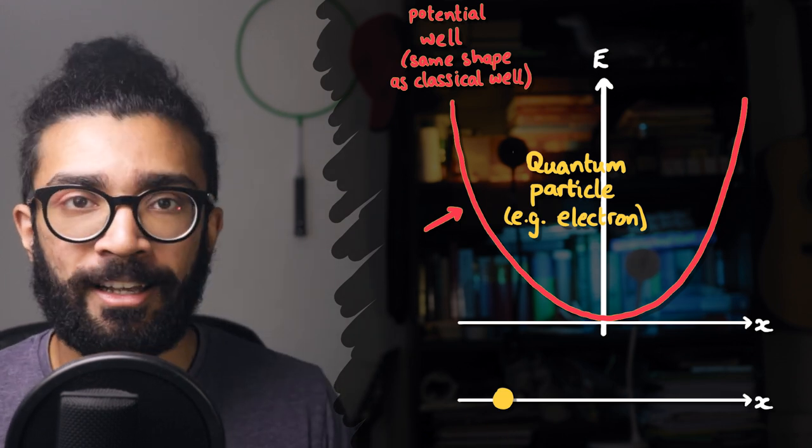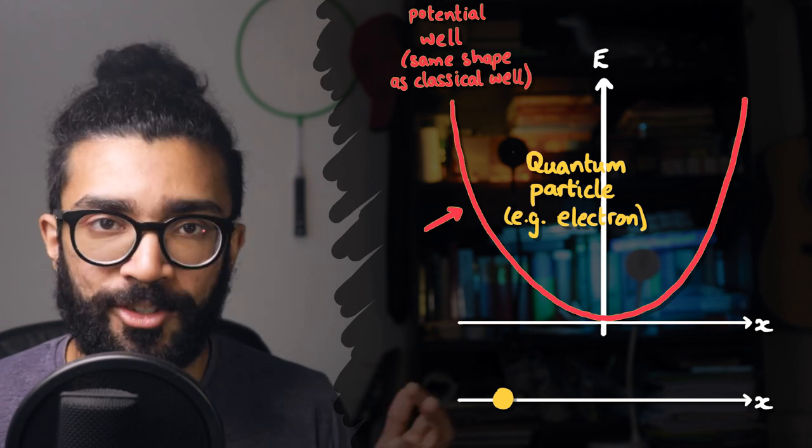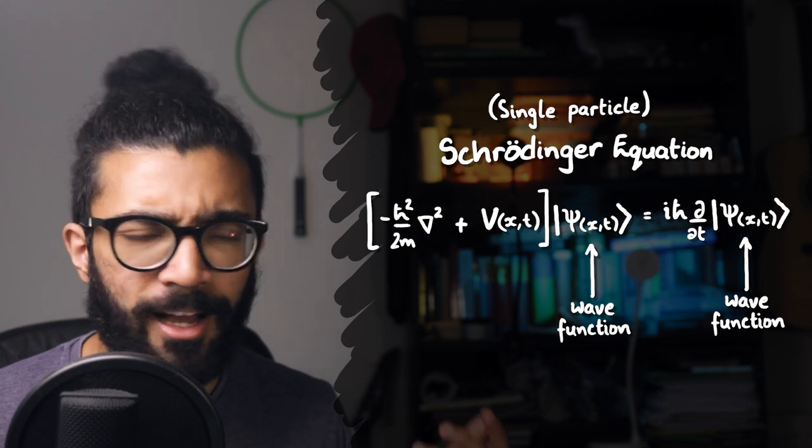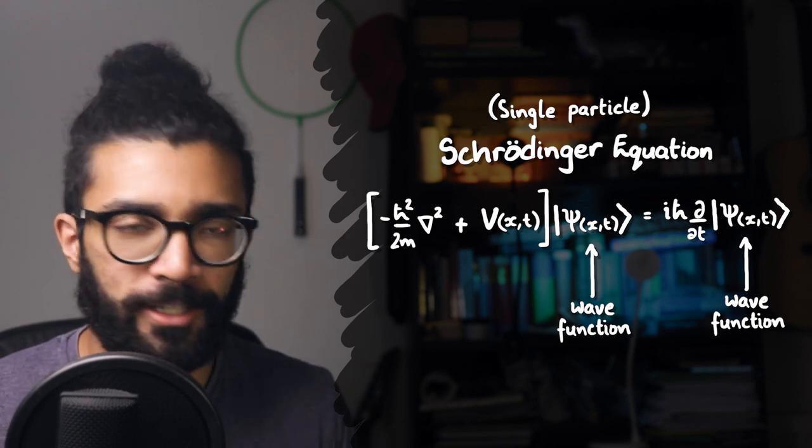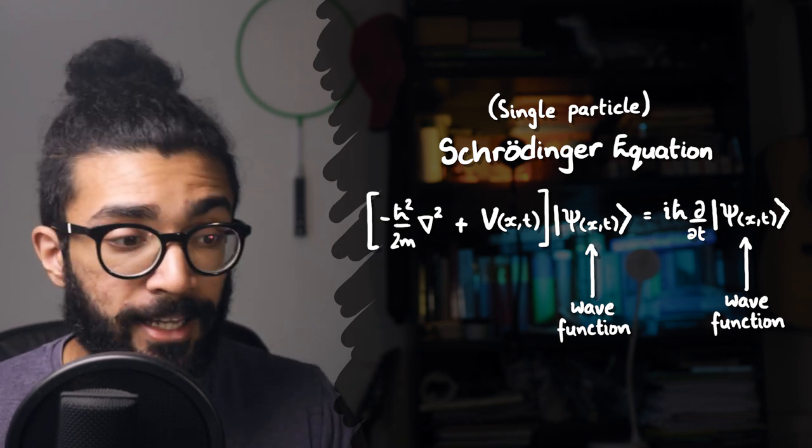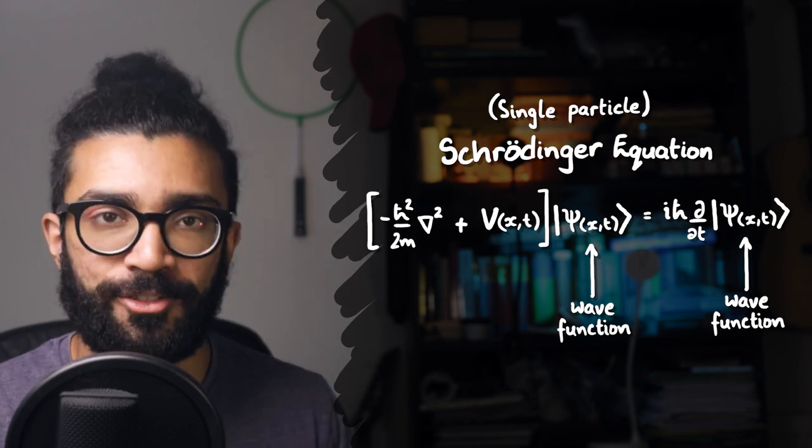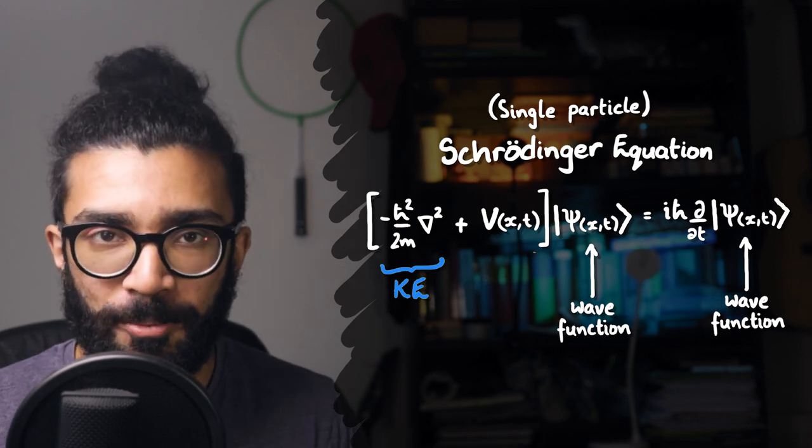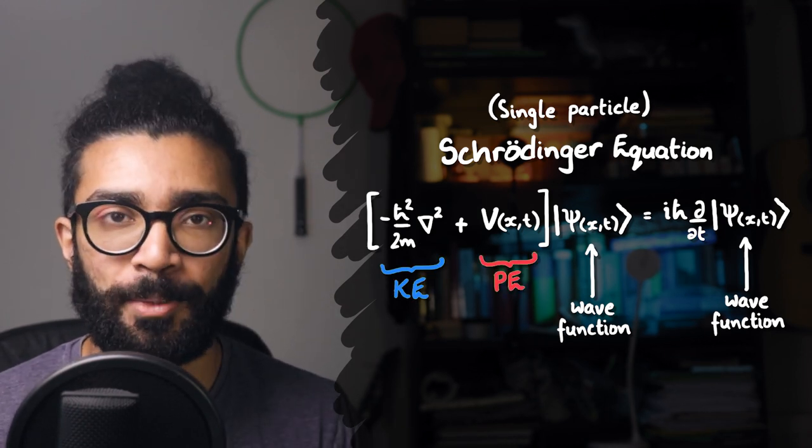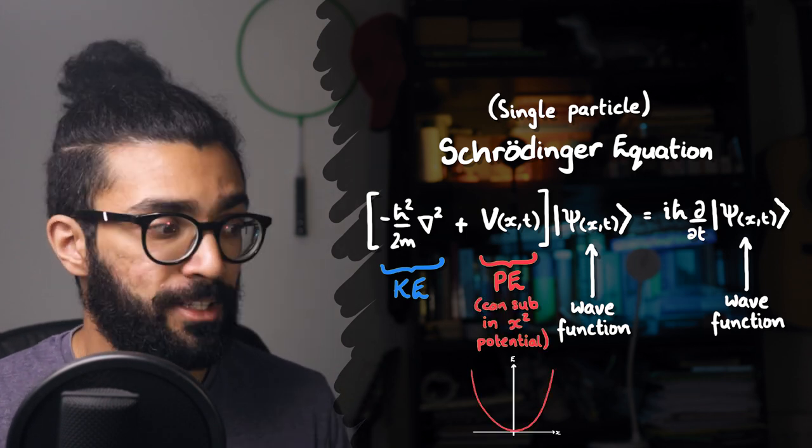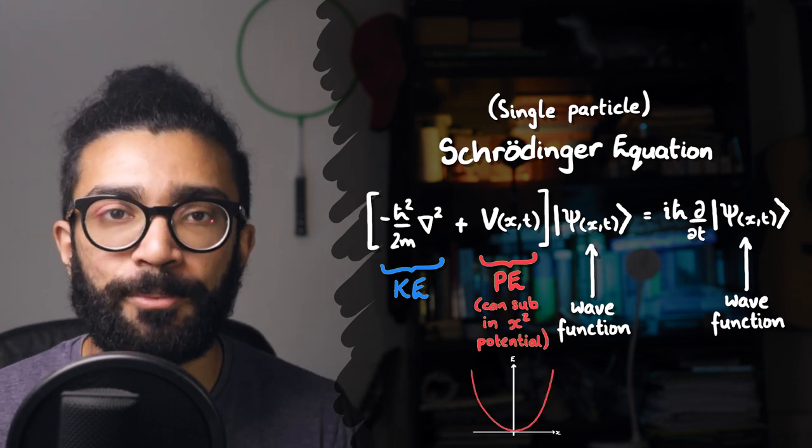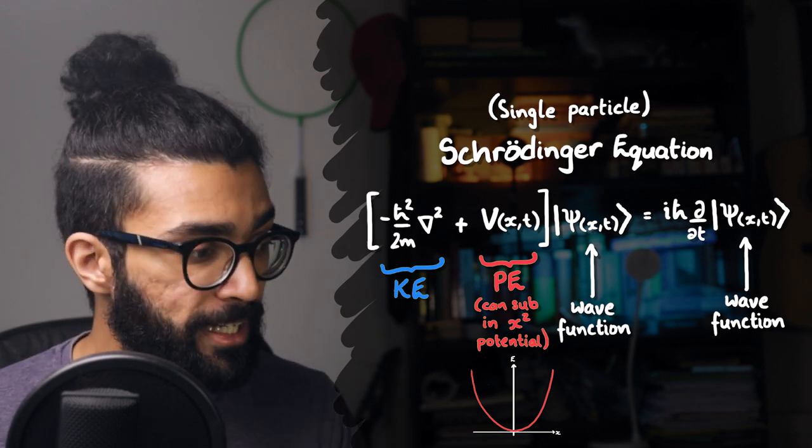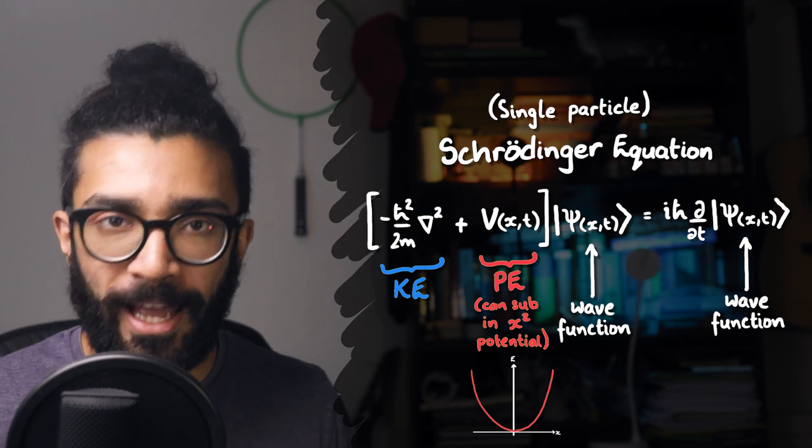This time though, because we're looking at a quantum system, we have to use the Schrodinger equation. A quantum system is defined by its wave function, which is basically a mathematical formulation of all the information we know about that system. And the behaviour of this wave function is determined by the Schrodinger equation. In this equation, this term refers to the kinetic energy of the particle, and this term refers to its potential energy. So in this case, we're going to substitute that quadratic potential well for the potential energy. In essence then, we are solving Schrodinger's equation for a particular potential well, and we're going to see how these quantum particles behave.